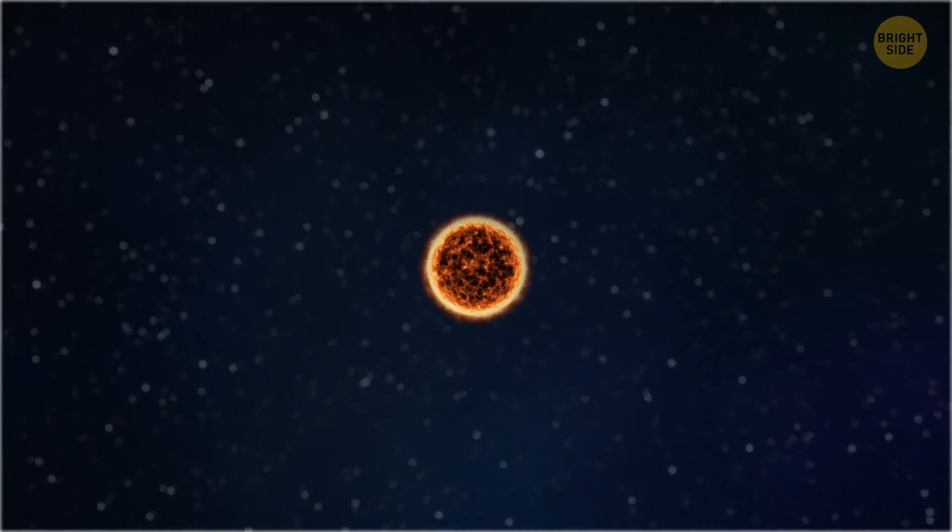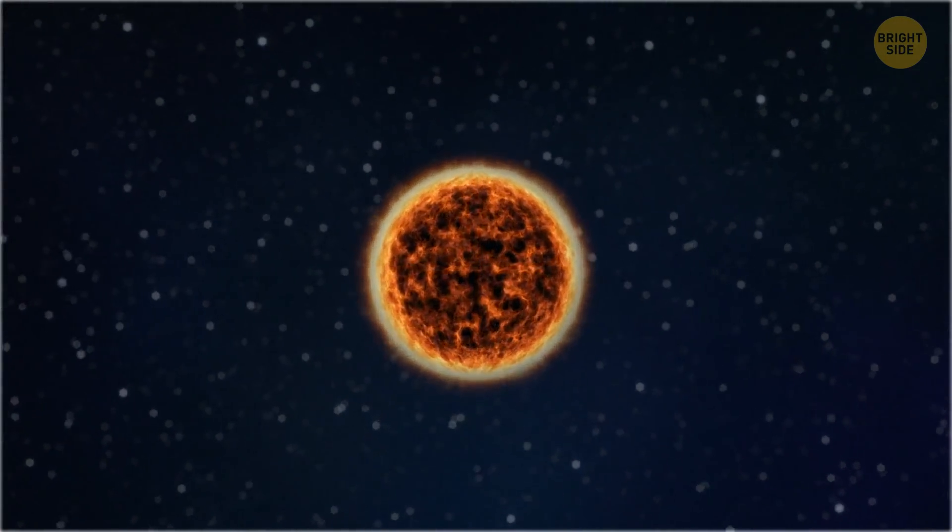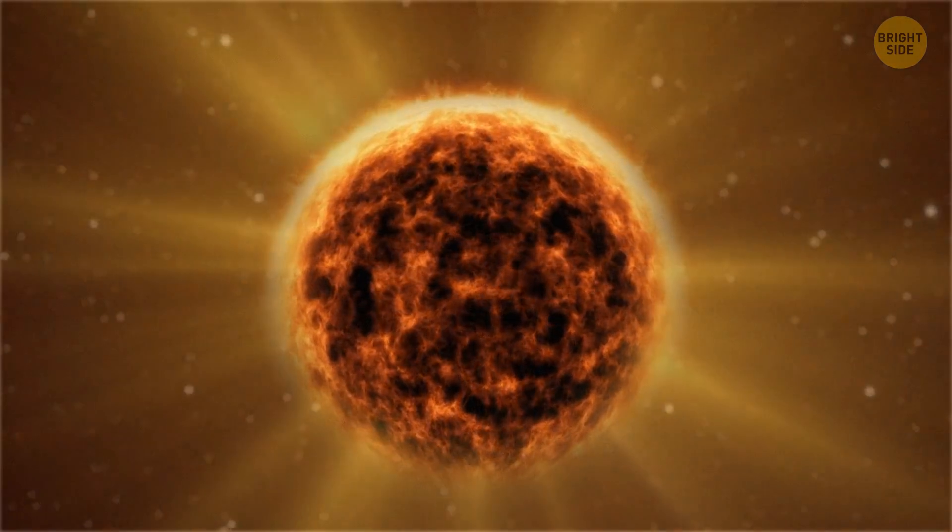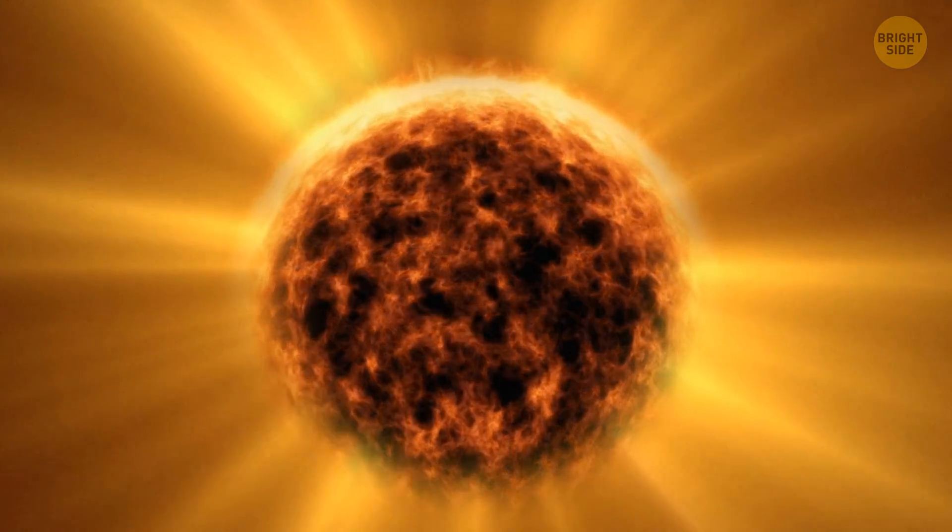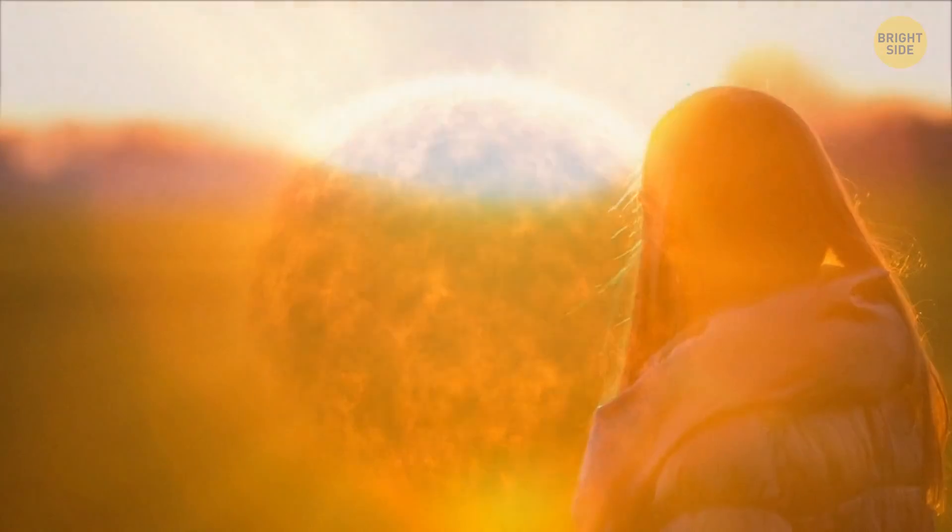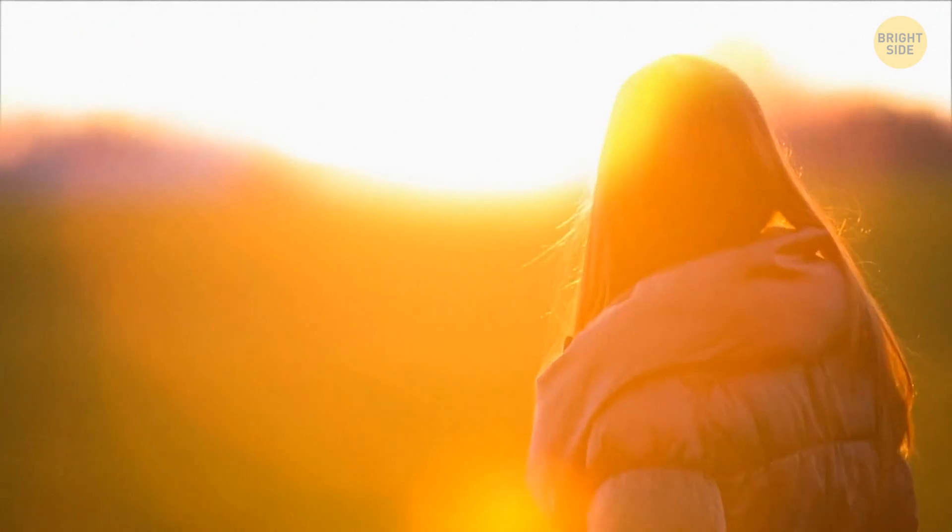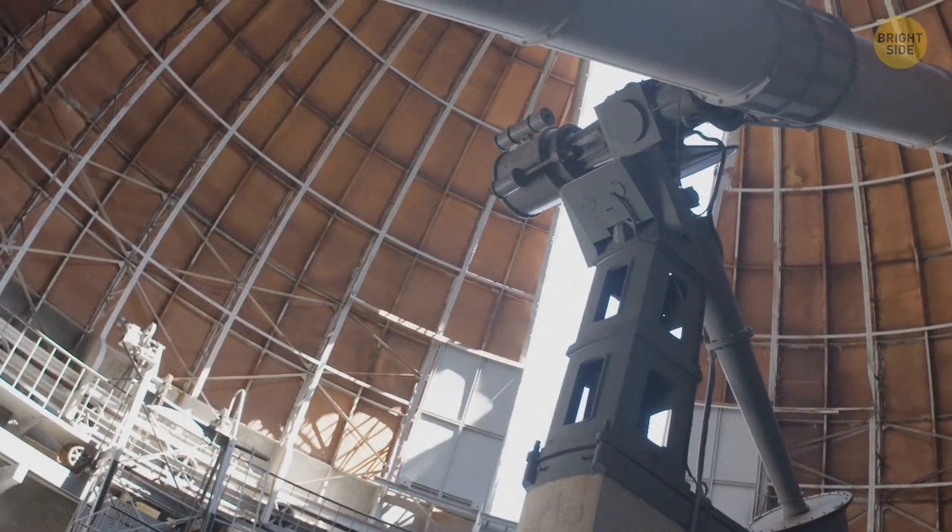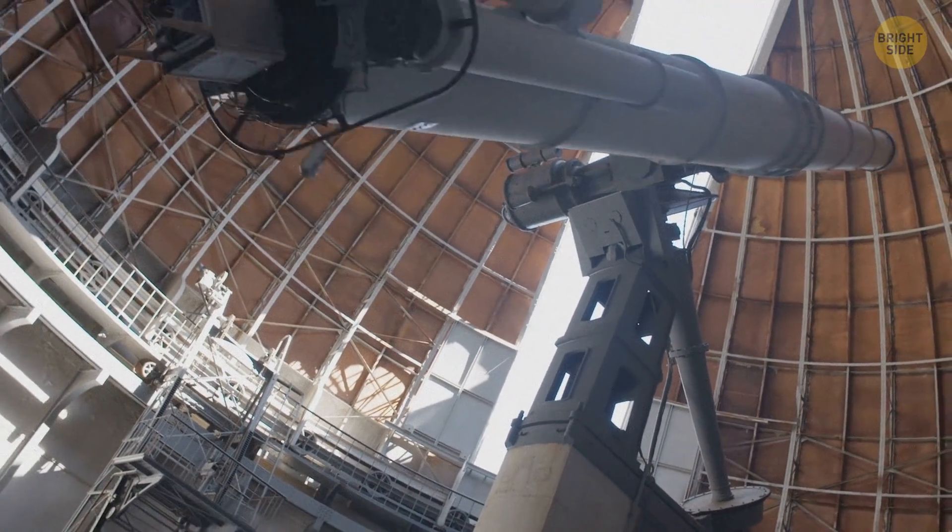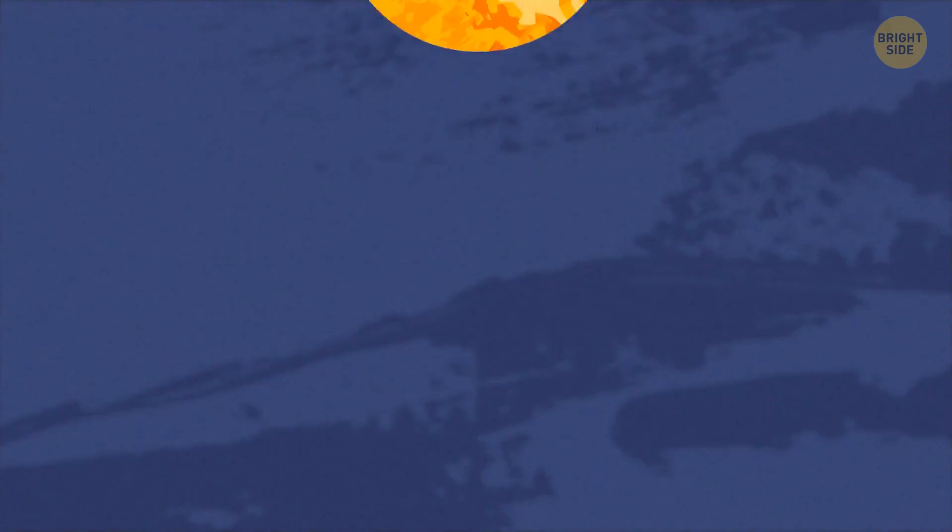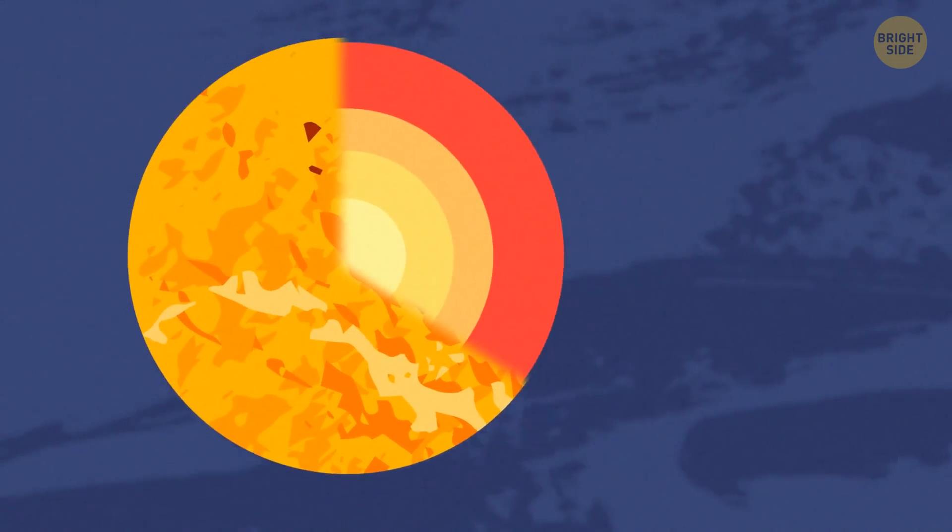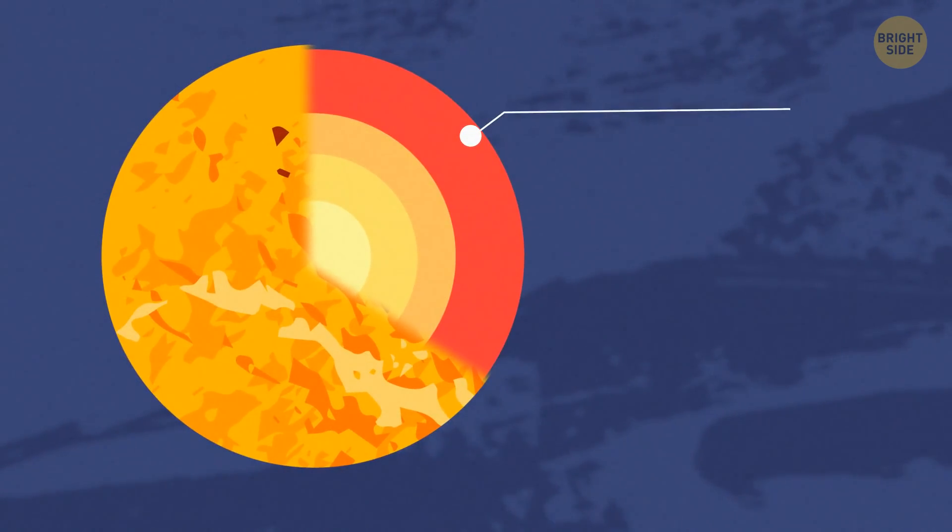The next layers are the sun's atmosphere. First, the photosphere. This is the layer that gives off light. And that's exactly what you see when you look at the sun. But careful, don't do that. You need special equipment to look at our star. The photosphere is up to 250 miles thick. This is about the height at which the International Space Station moves above Earth. Then, the chromosphere, or the sphere of color. This layer of the sun's atmosphere gives the star its reddish hue.